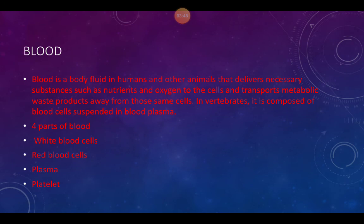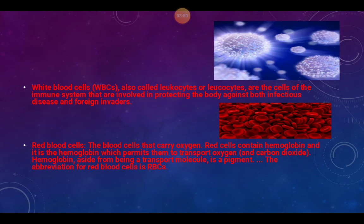White blood cells, also known as WBCs or leukocytes, are the cells of the immune system involved in protecting the body against infectious diseases and foreign invaders. They are like the police of the body — they fight infections, viruses, and other threats. If you have a healthy immune system, you have strong white blood cells able to fight viruses and diseases.